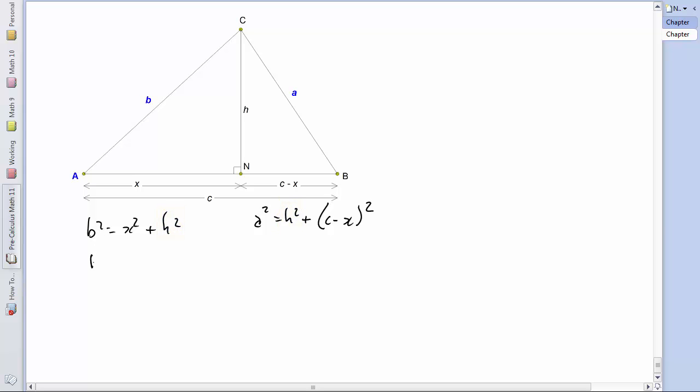This is H squared equals B squared minus X squared. And over here on the right, before I do that, I just want to expand this C minus X squared into a slightly more conventional form of C squared minus 2CX plus X squared. So we will have H squared equals A squared minus C squared plus 2CX minus X squared. And again, since both of these are equal to H squared, let's set them as equal to each other.